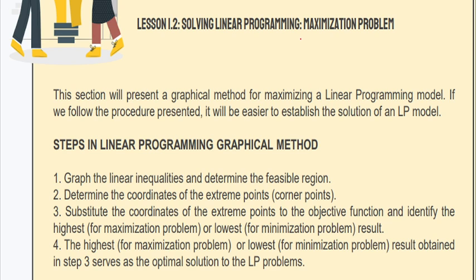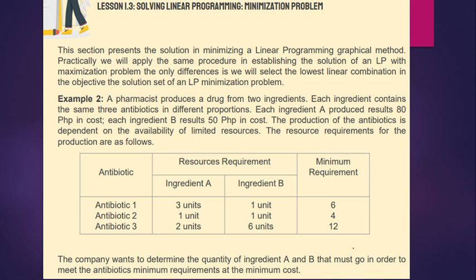In solving linear programming minimization problems, the steps are: graph the linear constraints, determine the coordinates, substitute the coordinates, and find the lowest value. Minimization has the same steps. This section presents the solution for minimizing linear programming using the graphical method. We will apply the same procedure as in maximization problems. The only difference is we will select the lowest linear combination in the objective solution set of the linear programming minimization problem.